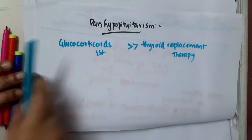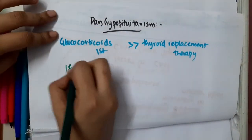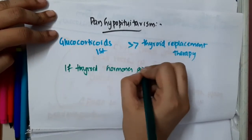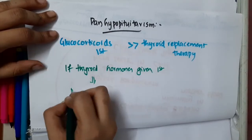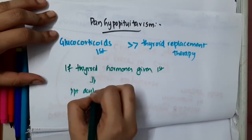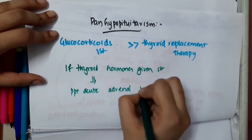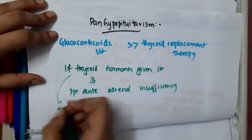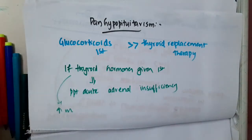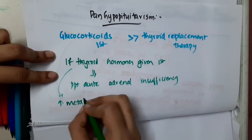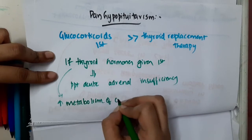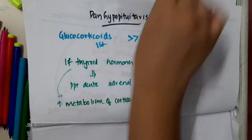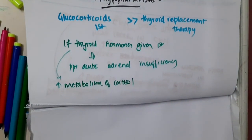Why? Because if thyroid hormones are given first, this will precipitate acute adrenal insufficiency. These thyroid hormones will increase the metabolism of cortisol, and by increasing the metabolism of cortisol, they will precipitate adrenal insufficiency.